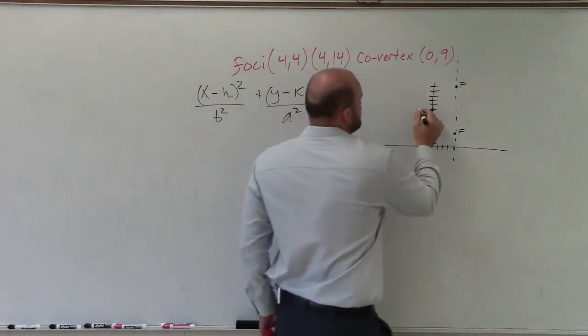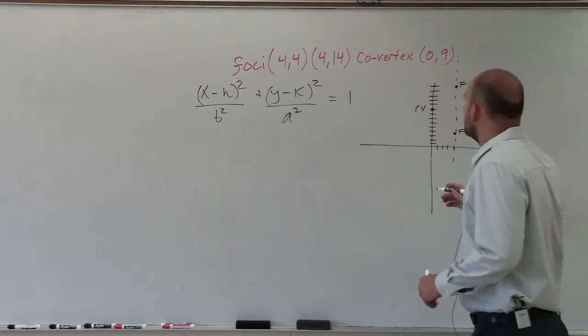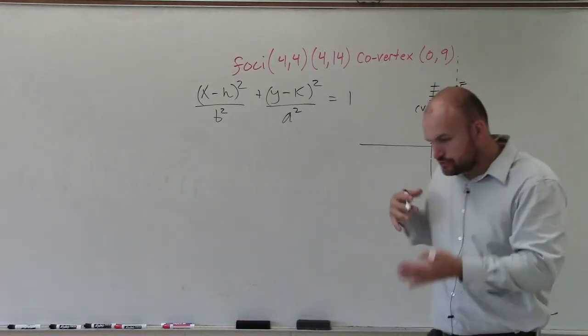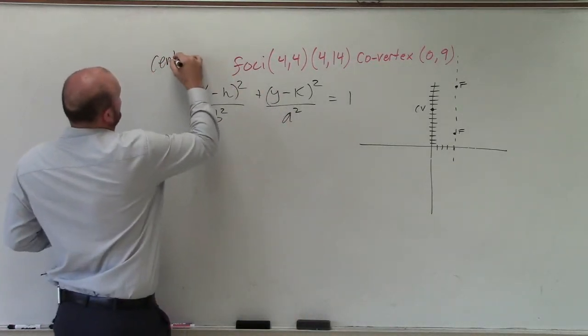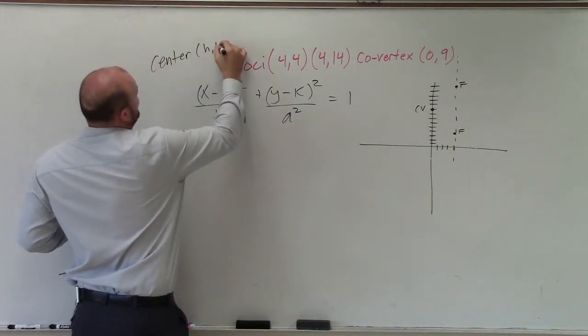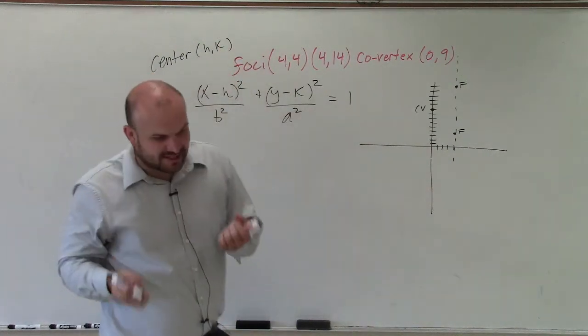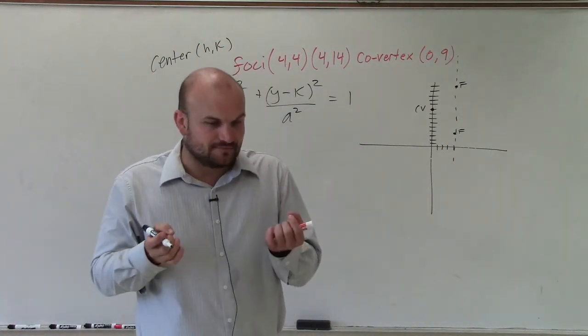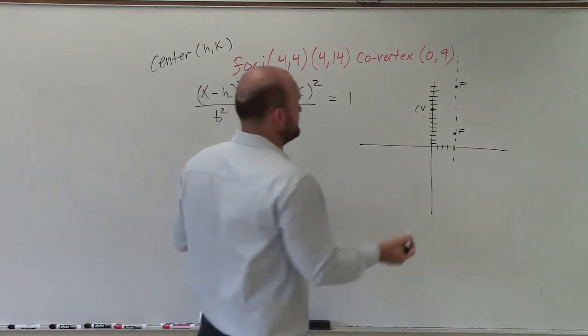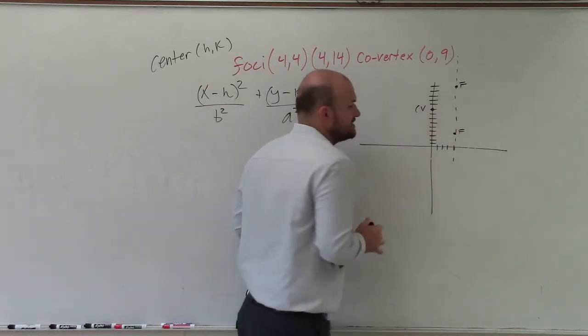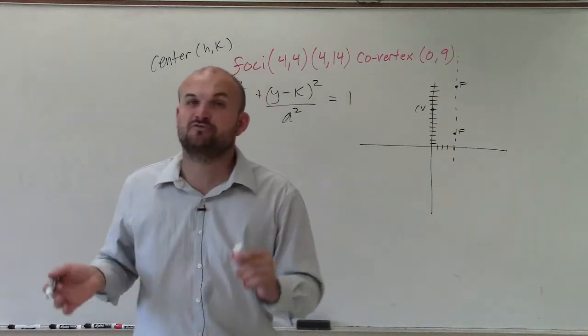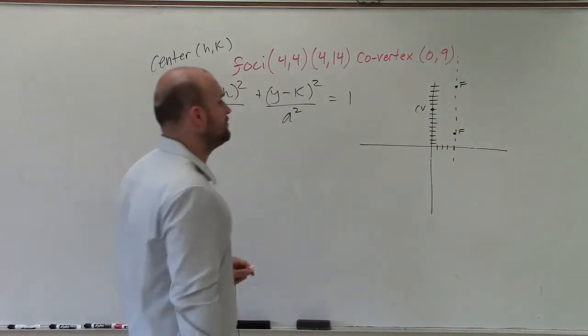The next thing here is one co-vertex. Now, notice that, again, when we're looking into trying to determine the center, and the center of an equation is in the form of (h,k). Well, what's nice about the center is the center is the half distance between your two foci, as well as the half distance between your two co-vertices, and the half distance between your two vertices, which we don't have anything for yet.